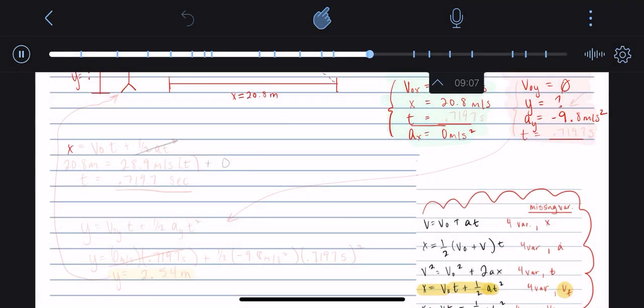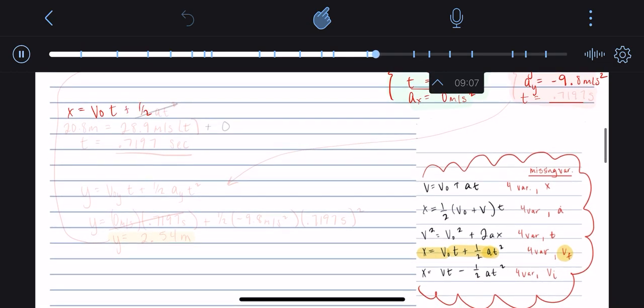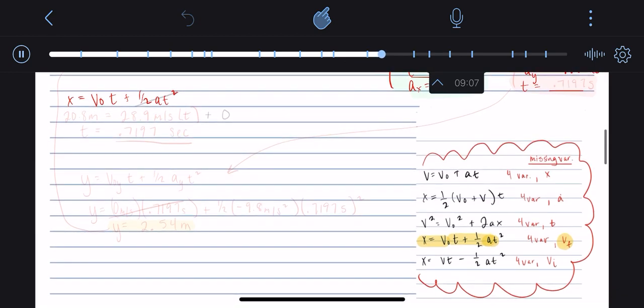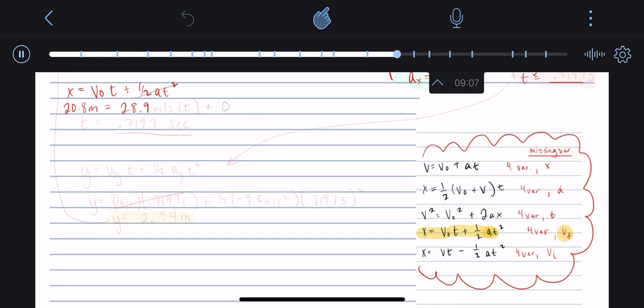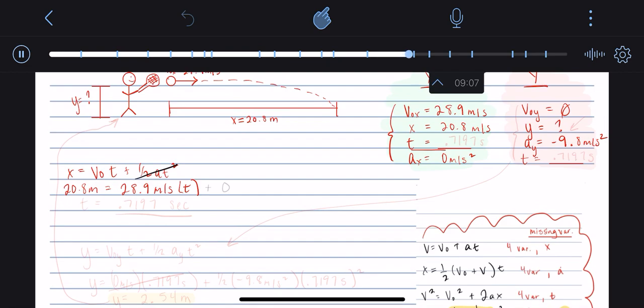Now I'm just going to write down the equation, x equals v initial t plus one half at squared. And then I'm going to just begin plugging in all of my numbers that I get from my x dimension. So for x, the distance, I'm going to plug in 20.8 meters. For my initial velocity, I will use 28.9 meters per second. My time, I don't know, so that's what I'm solving for. And then this whole second part is actually just going to get cancelled out because our acceleration is equal to zero, so that's going to make that entire term go to zero.